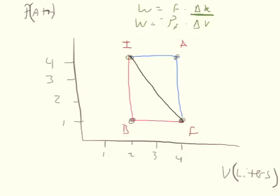Now we have three different formulas for three different paths. Before we plug in the numbers, we need to convert units to get our answer in joules. We need to convert pressure to Pascals and volume to cubic meters. There are 101,325 Pascals per atmosphere, and 0.001 cubic meters per liter.